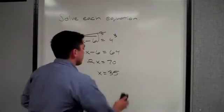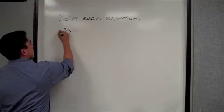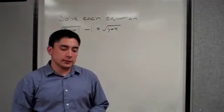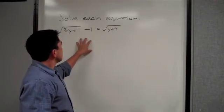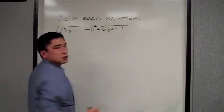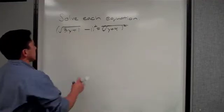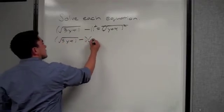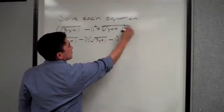Now comes the big hard problem — this one takes quite a few steps. It's the square root of 3y plus 1, minus 1, is equal to the square root of y plus 4. This would be easy without the minus 1, but that makes things more difficult. So we're going to square both sides. On the left, the square and root cancel, but because of the minus 1, we'll have to FOIL, since squaring that expression is the same as multiplying the parenthesis times itself: (√(3y+1) − 1) times (√(3y+1) − 1).